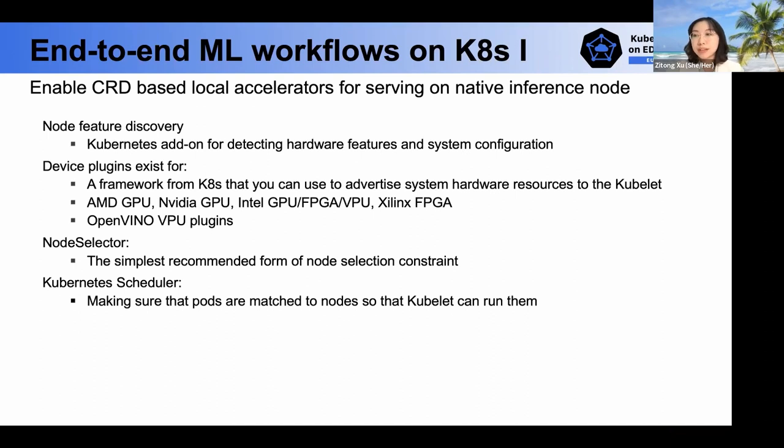The second one is device plugin, which is a framework from Kubernetes that you can use to advertise system hardware resources to the Kubernetes. We will use them to register and publish hardware resources on the nodes to the Kubernetes for scheduler to schedule. Currently, Kubernetes already provided some official implementation examples for AMD GPU, NVIDIA GPU, Intel GPU, VPU, FPGA, etc. OpenVINO runtime plugins also enables inference of deep learning models on some supported VPU, GPU devices such as Intel Neural Compute Stick, Intel Movidius VPUs. We should note that Intel Kubernetes device plugins just support many new VPU cards and does not support the old device like NCS1. Thus, we did an investigation on deploying OpenVINO VPU plugins.